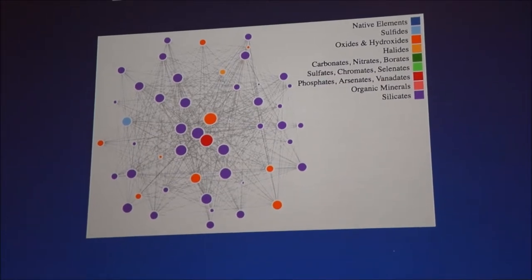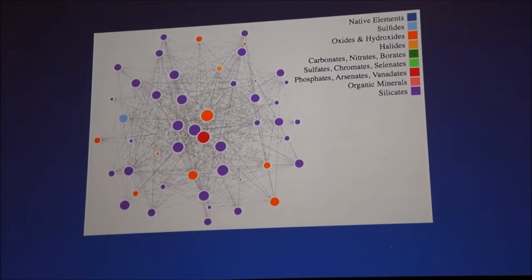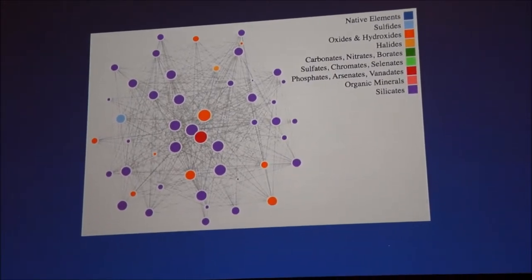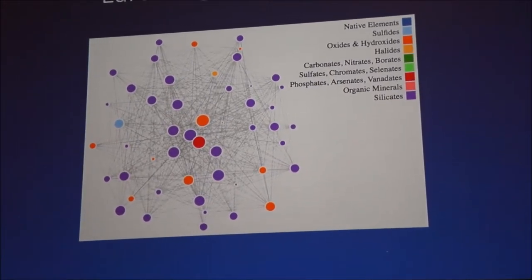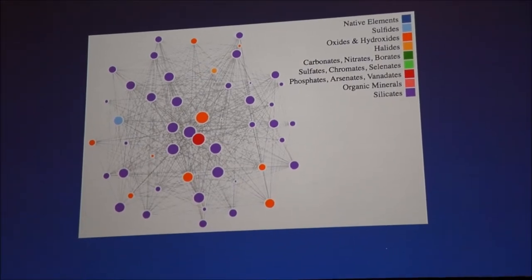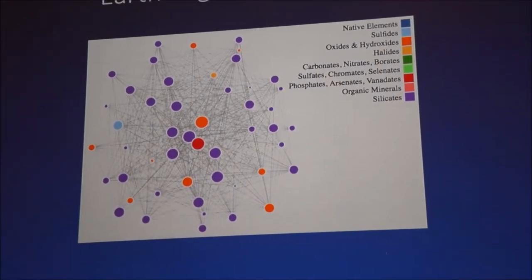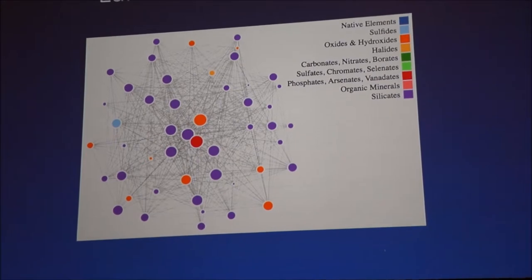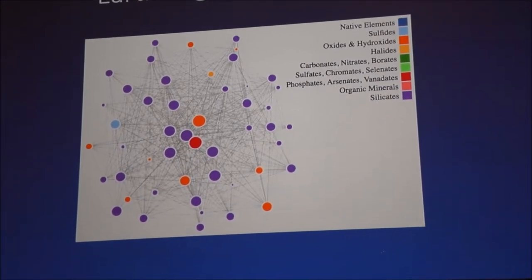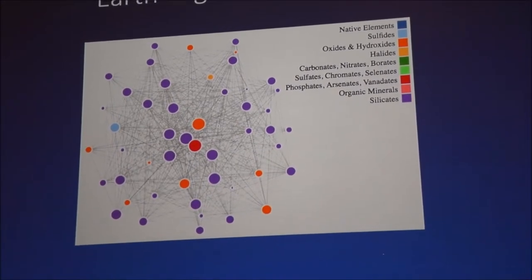And another important thing to point out is the node diameter. So that's scaled in proportion to the frequency of occurrence. And also the links, the link between those nodes is scaled inversely proportional to the frequency of co-occurrence. So essentially, if two minerals have a short link, if they're close together, they occur together frequently. If they are far apart, they occur together less frequently.